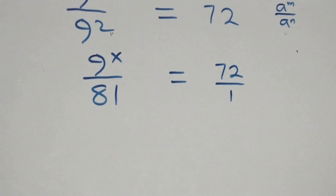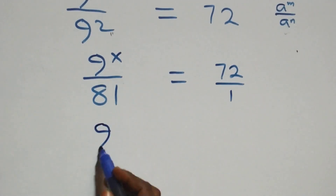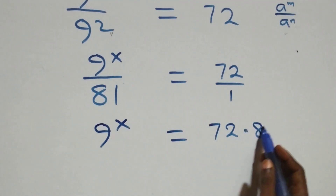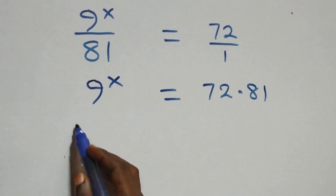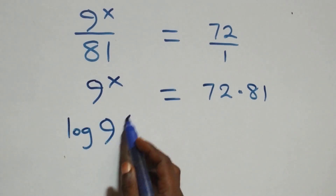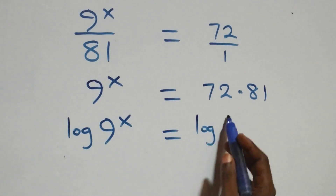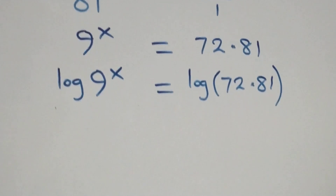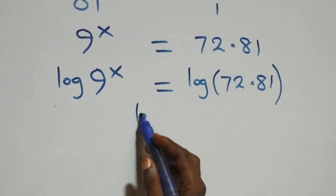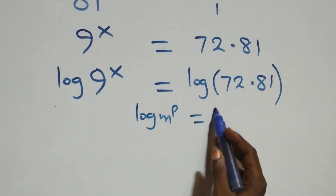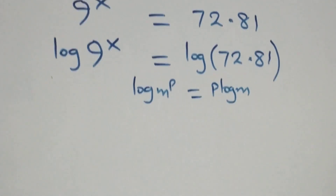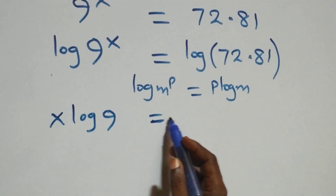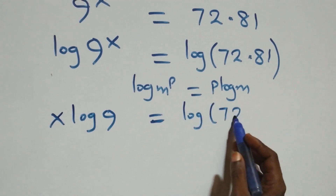We cross multiply: nine raised to power x times one equals nine raised to power x, which equals 72 times 81. Next, we take the log on both sides: log of nine raised to power x equals log of 72 times 81. Applying the power rule of logarithm — log m raised to power p equals p log m — this becomes x log nine equals log 72 times 81.